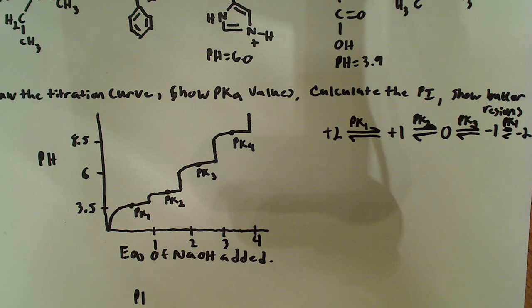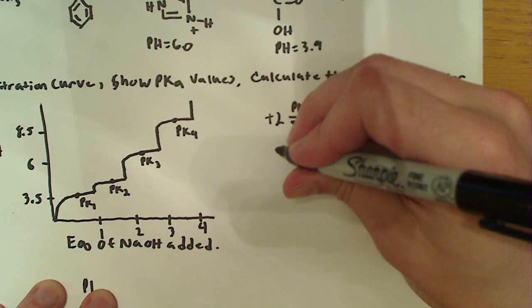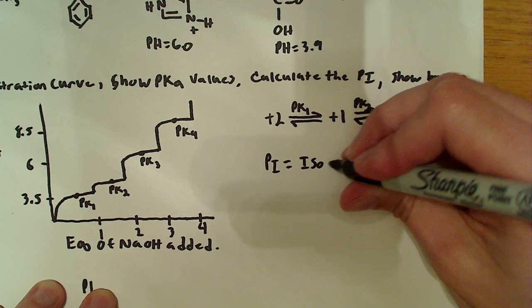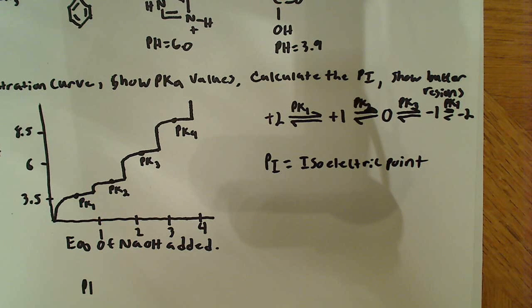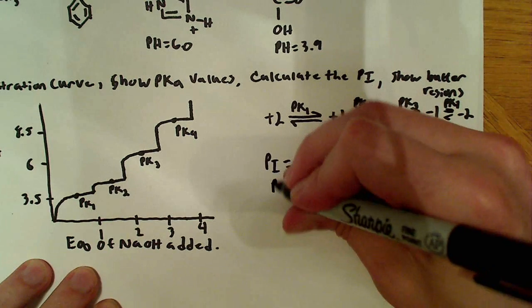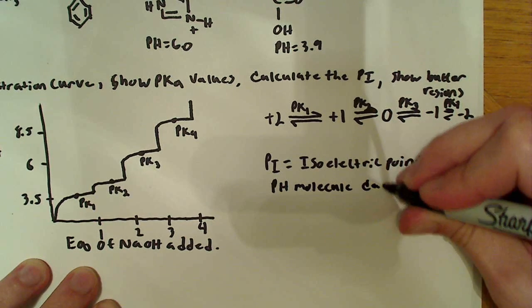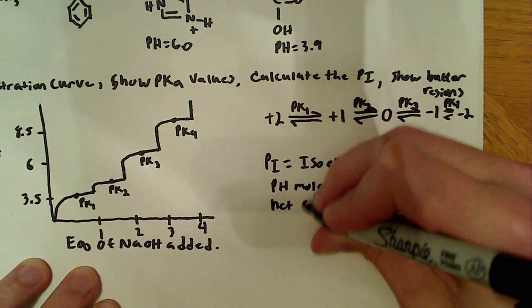And the question was asking us not only to draw the titration curve and show the pKa values on there, it's also saying calculate the pI. So you might be wondering what the hell this pI is. Well, the pI is also known as the isoelectric point.